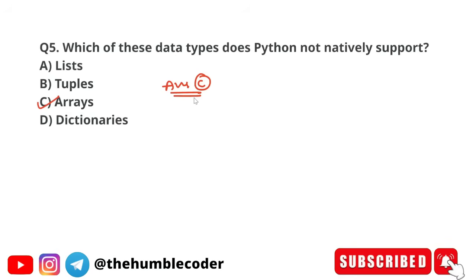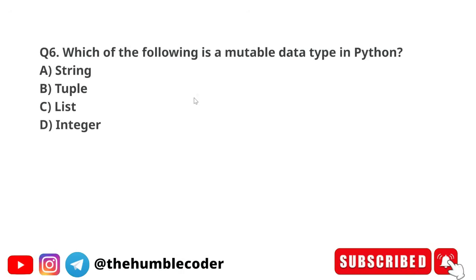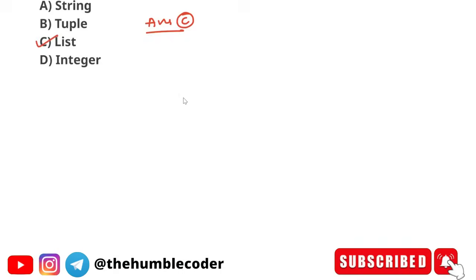Question 6: Which of the following is a mutable data type in Python? Options are string, tuple, list, and integer. The correct answer is option C — list. Lists in Python are mutable, which means they can be changed after creation.